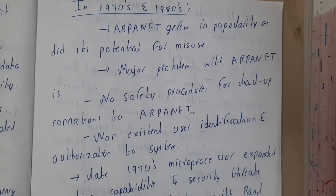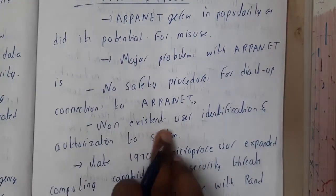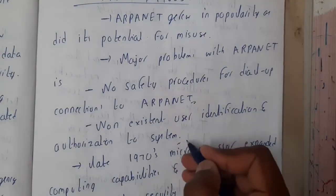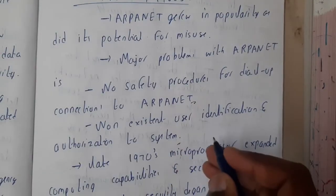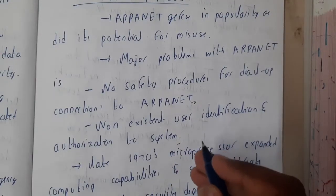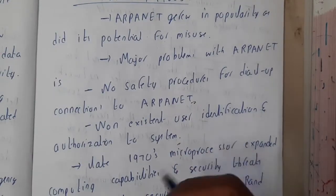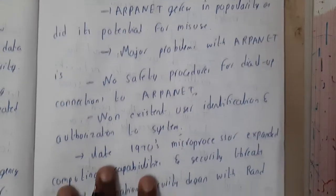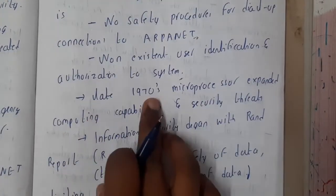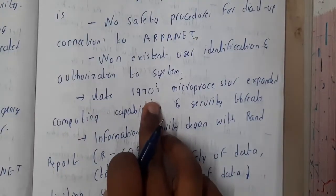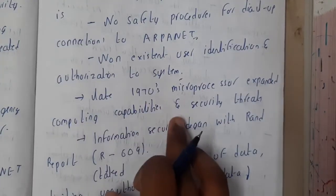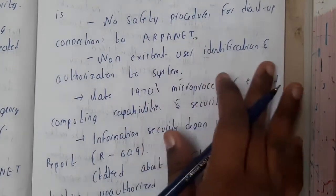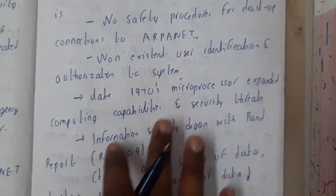Non-existing user identification and authentication to the system was another drawback — users did not have any kind of proper authentication methods. Similarly, in the late 1970s, microprocessors expanded computing capacity and security threats.